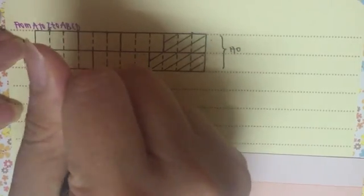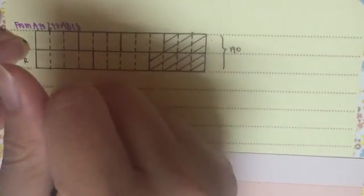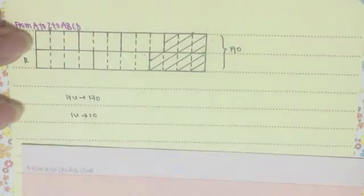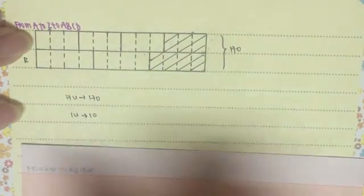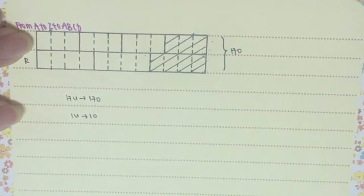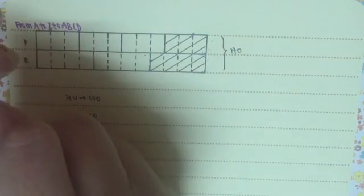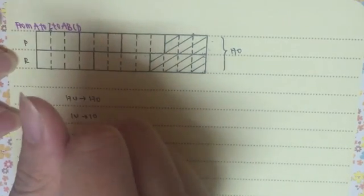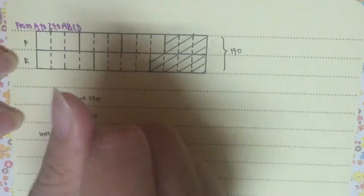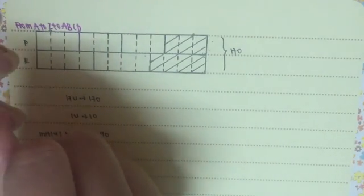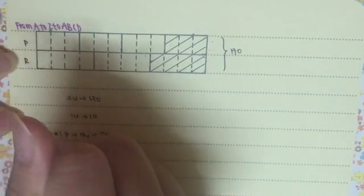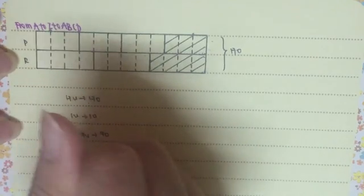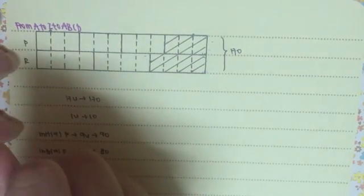So, with this, you will be able to calculate that 17 units of these small units will be equal to 170. Therefore, one unit equals to ten. Then the initial P will actually be equal to nine units, therefore, it's equal to 90. Then, initial R will actually be equal to eight units, so this is equal to 80.